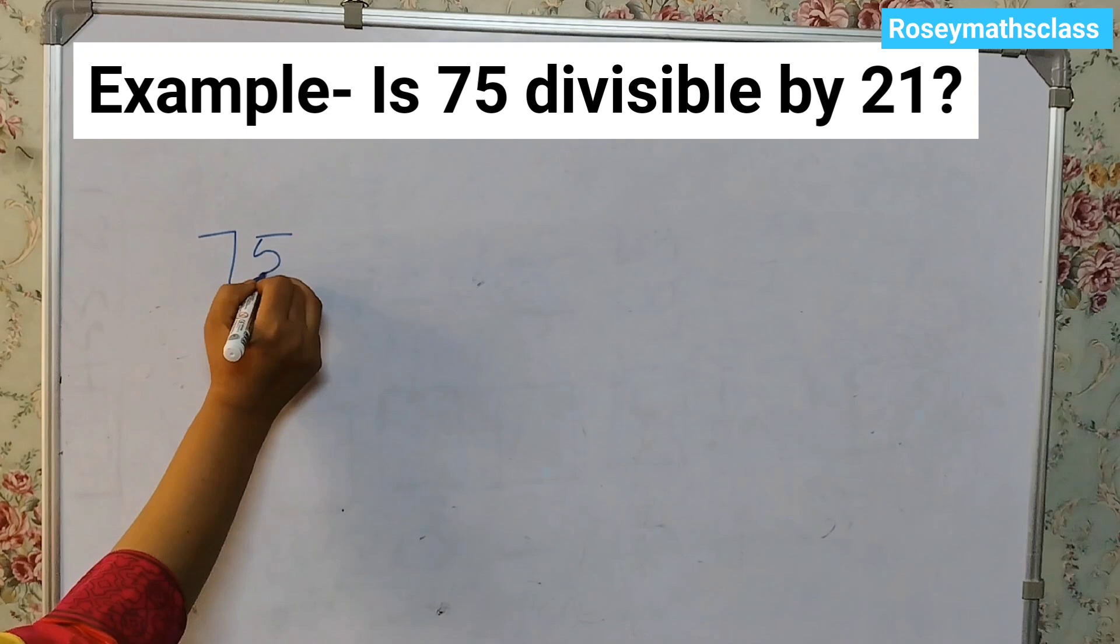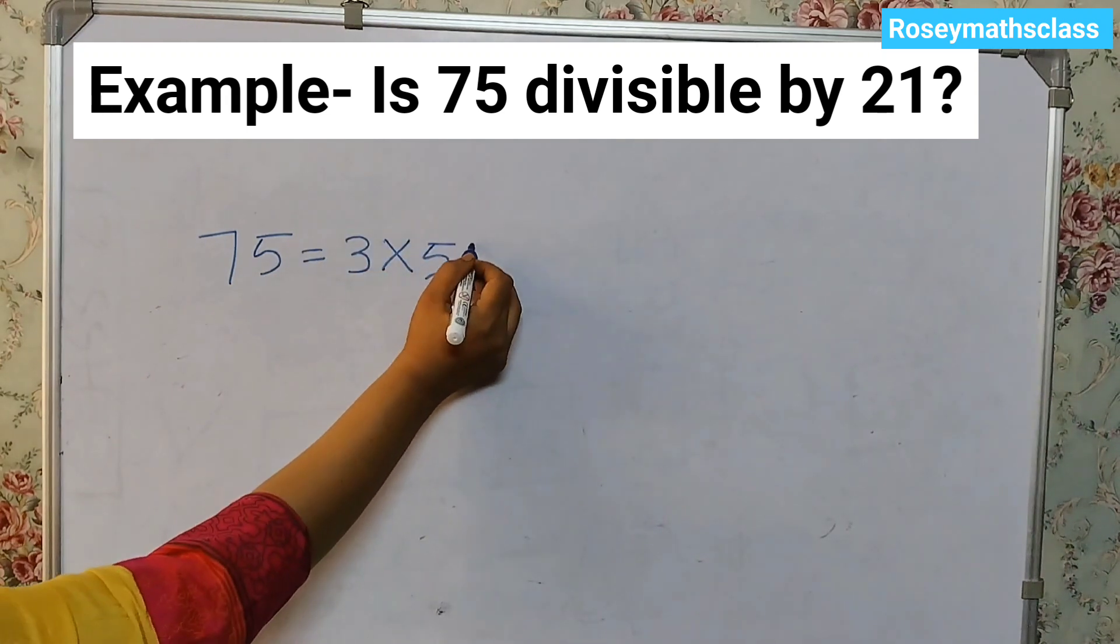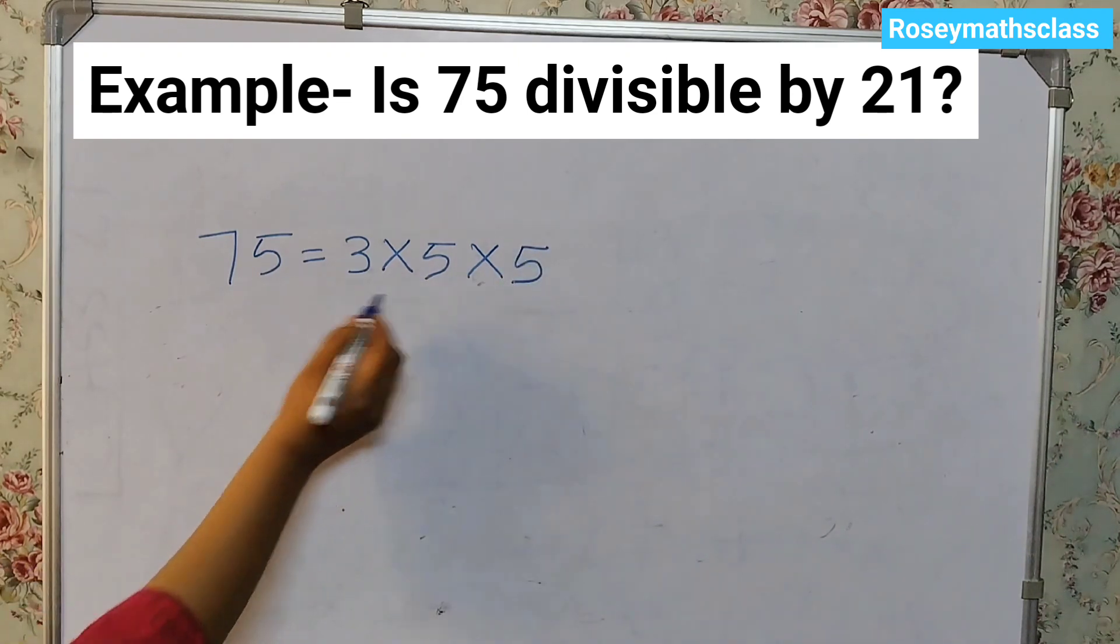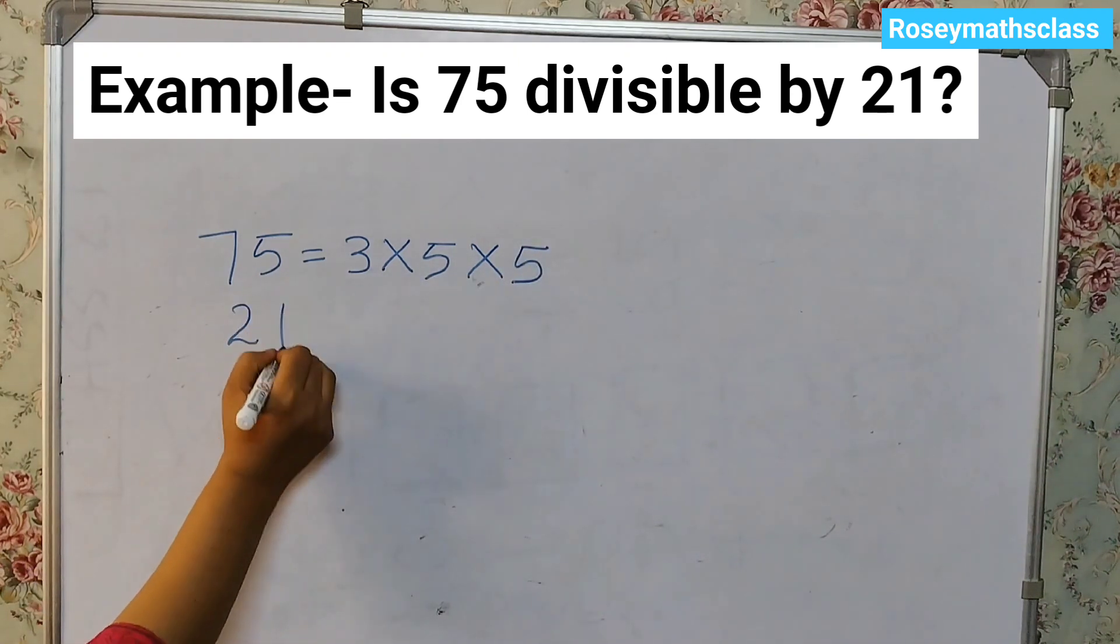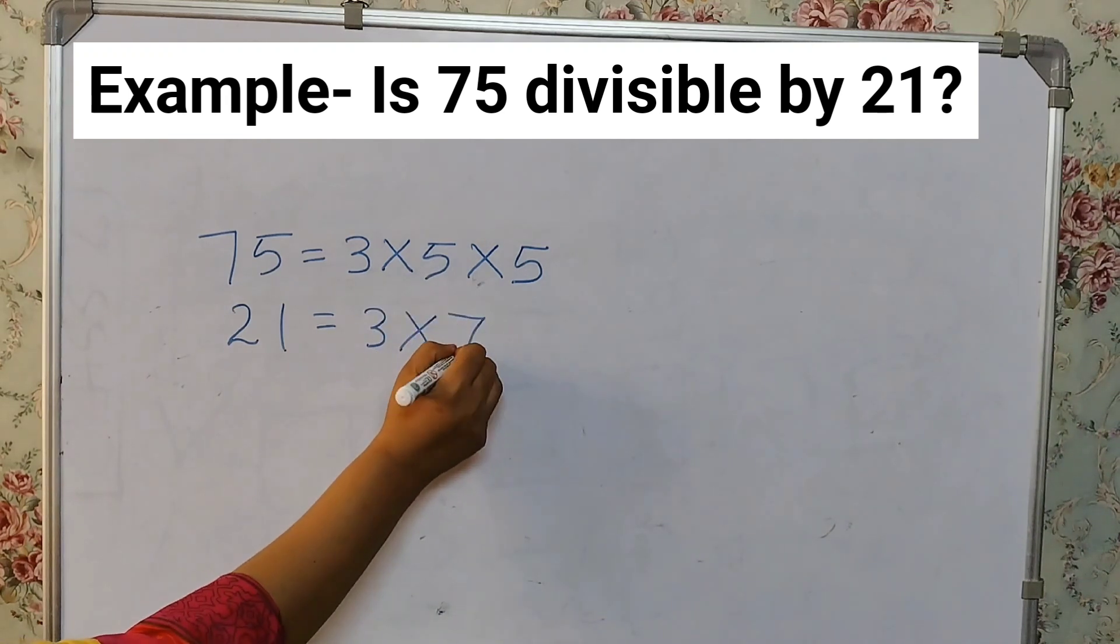75 is equal to 3 times 5 times 5. 3 times 5 is 15, 15 times 5 is 75. So these are the prime factors of 75. For 21 we have 3 times 7.